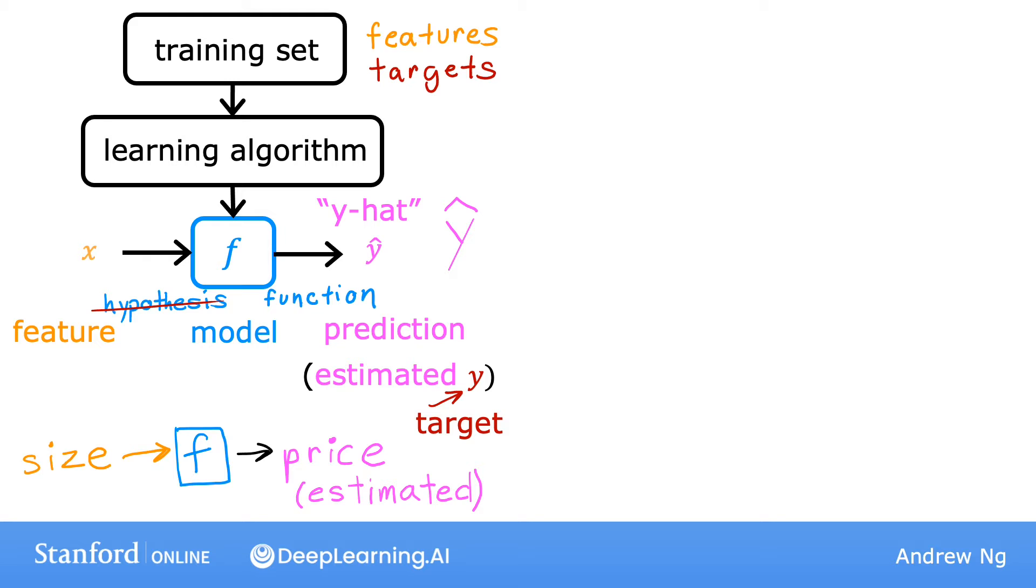Now, when we design a learning algorithm, a key question is, how are we going to represent the function f? Or in other words, what is the math formula we're going to use to compute f?